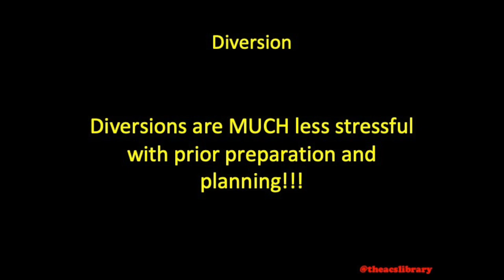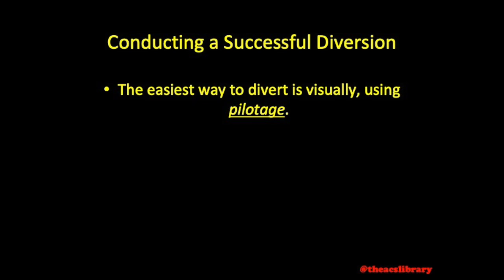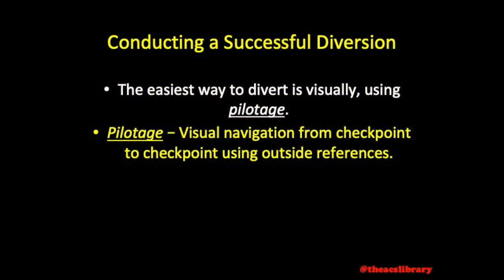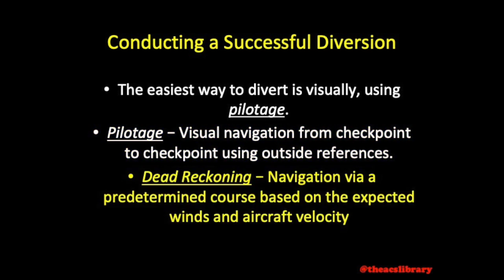The more preparation you do on the ground, the less scrambling you'll have to do in the air. Generally speaking, the easiest way to divert, if possible, would be visually, using pilotage — defined as visual navigation from checkpoint to checkpoint using outside references. If this option is not available, using the nearest-to function available with certain GPS-equipped aircraft or electronic flight bags may provide a quick route to a nearby suitable airport. If one must divert using dead reckoning — defined as navigation via a predetermined course computed by the pilot based on expected wind direction, speed, and aircraft velocity — the steps to follow will be listed below.